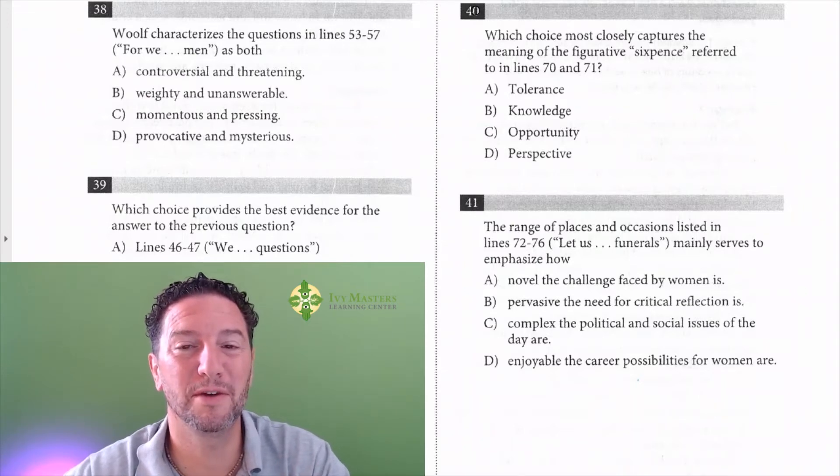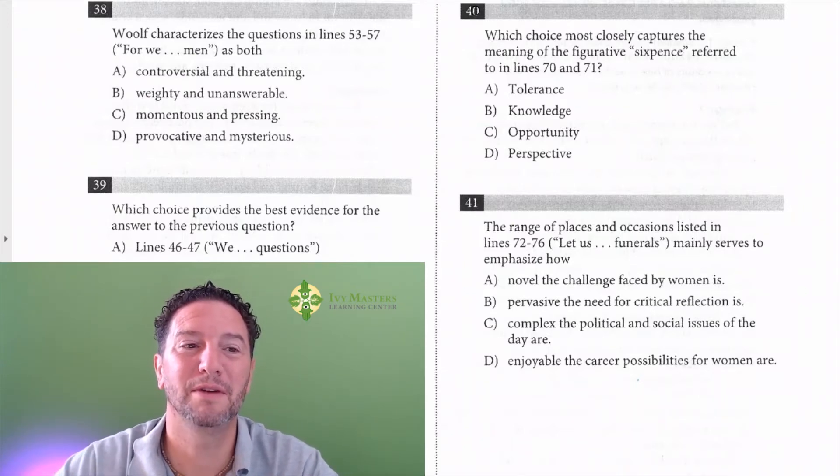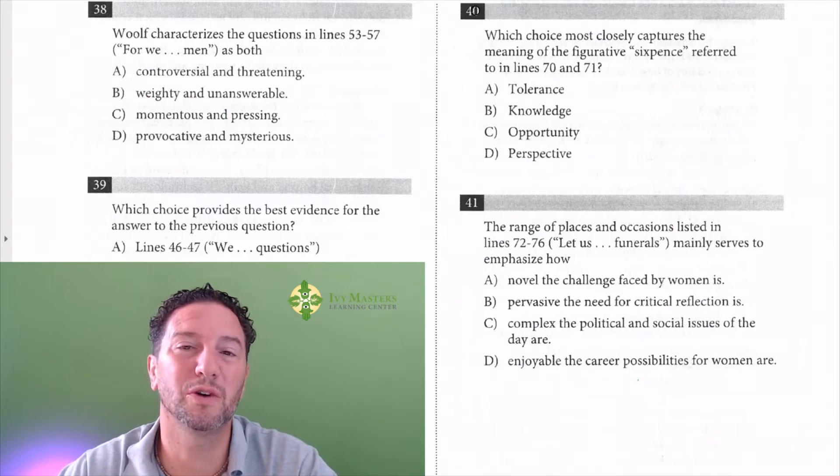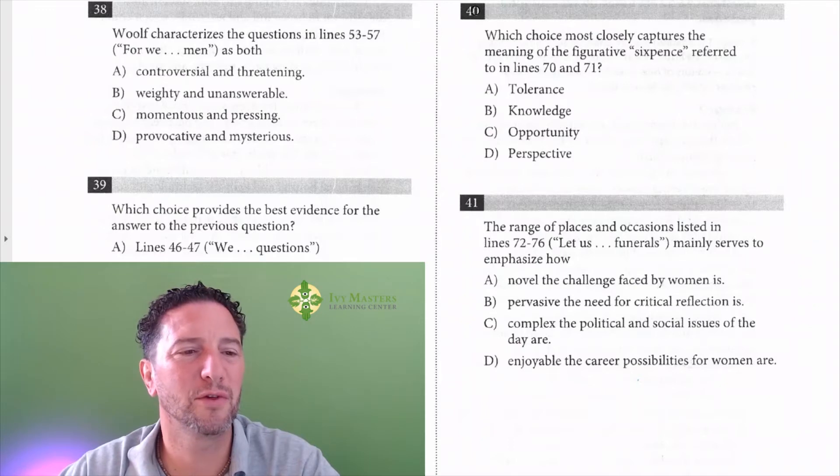My name is Paul Pasolka, IV Masters Learning Center and IVMasters.com. So we're going to look at Test 1, Section 1, Numbers 38 and 39, where we've got to read before and after. 38 reads, Wolf characterizes the question in lines 53 to 57 as both what and what.